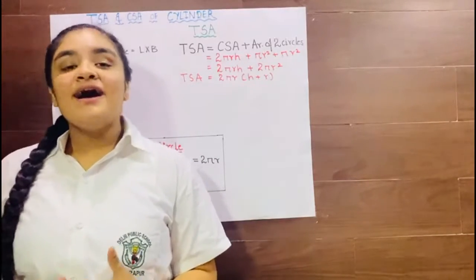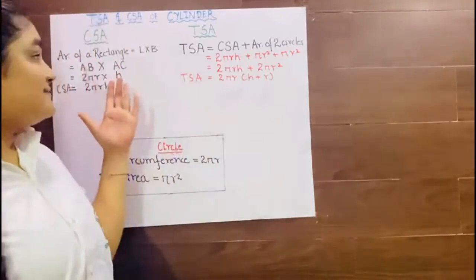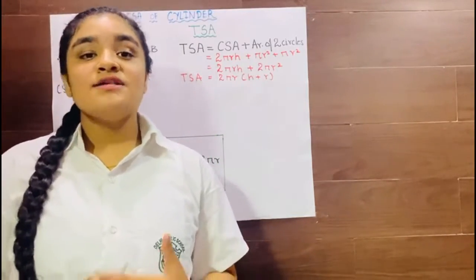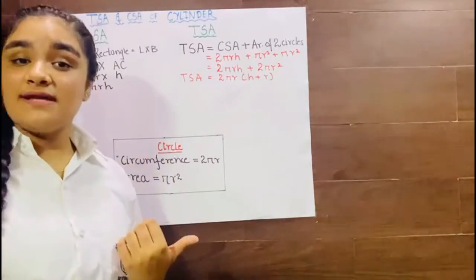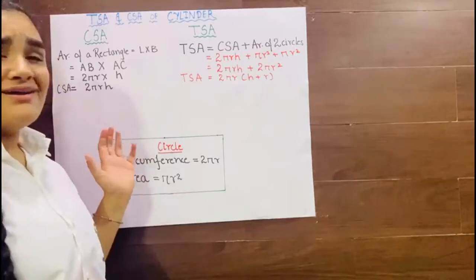Hello everyone, I am Simrit Kaur and I am here to derive the formula of TSA and CSA of a cylinder through an easy activity. TSA is the total surface area and CSA is the curved surface area. First of all I will start with CSA.